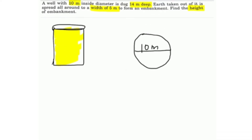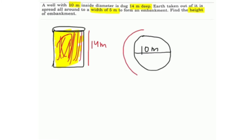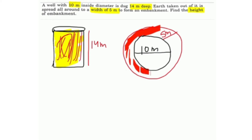The height of the well is 14 meter. The earth taken out of it is spread all around to a width of 5 meter to form an embankment like this. Now we have to find the height of the embankment.